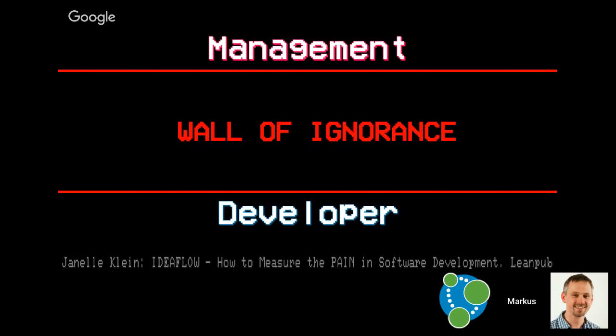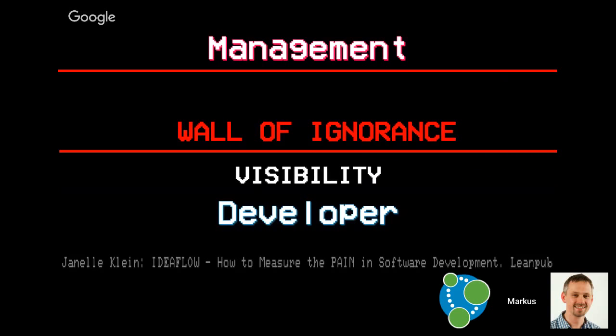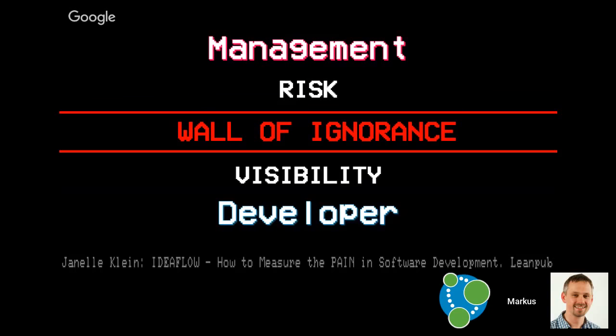The question is why is software development still so crazy? I found a nice little model here that's called the wall of ignorance between the management and the developer. It says that developers have to cross this huge wall by making their work more visible to management. But it's not a bottom up only strategy but also a top down. Management must have the means to communicate their risk taking. Management is responsible for the success of a company and an important parameter for this is risk taking. You have to communicate to the developers which games you play and which are not. And developers have to say, this risk is too risky here. We can really break the system with this change. So you have to enforce this communication and to get rid of this wall of ignorance.